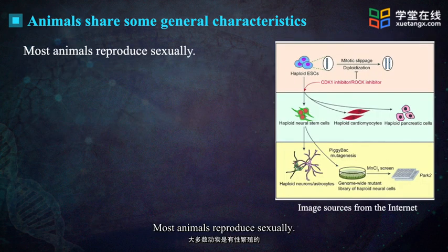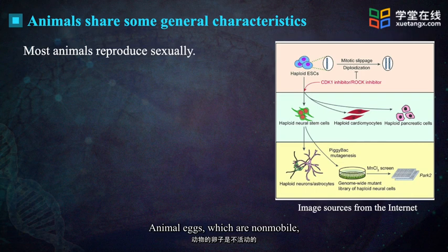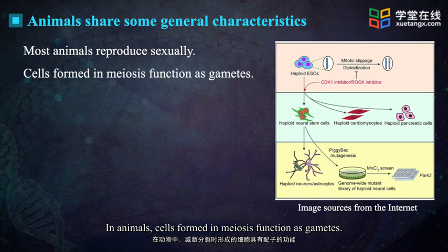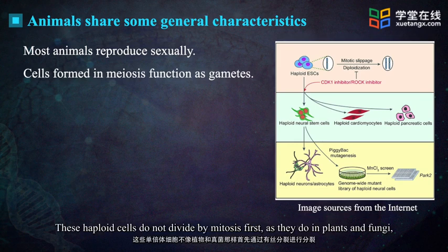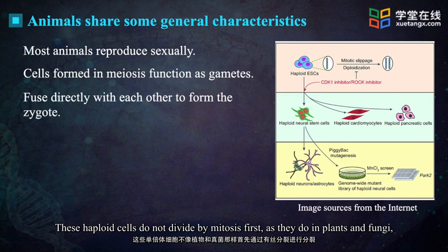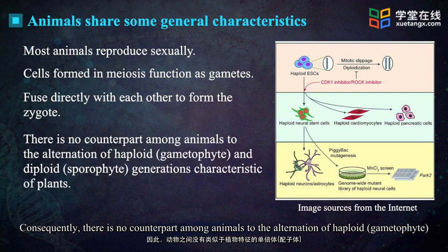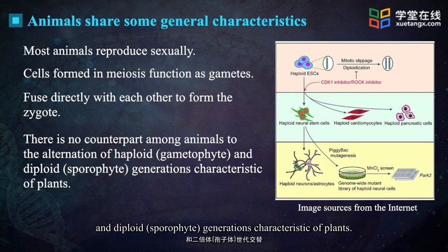Most animals reproduce sexually. Animal eggs, which are non-mobile, are much larger than the small, usually flagellated sperm. In animals, cells formed in meiosis function as gametes. These haploid cells do not divide by mitosis first, as they do in plants and fungi, but rather fuse directly with each other to form the zygote. Consequently, there is no counterpart among animals to the alternation of haploid and diploid generations characteristic of plants.